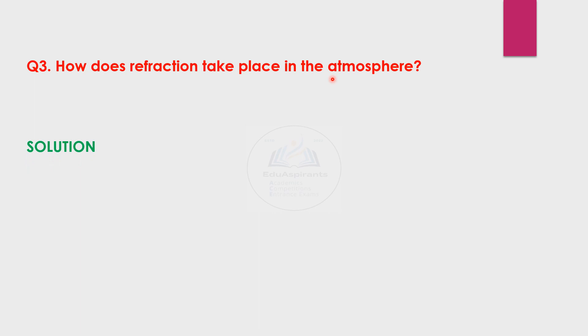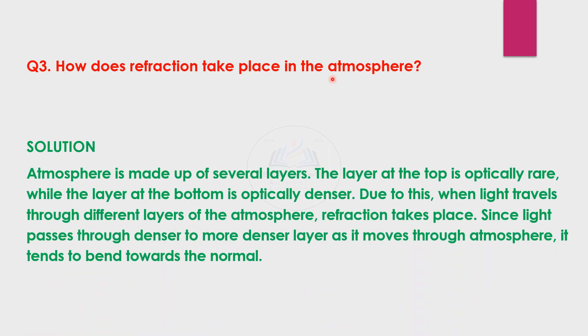Let us see the answer if you have recollected it correct. Atmosphere is made up of several layers. The layer at the top is optically rare while the layer at the bottom is optically dense. Due to this, when light travels through different layers of the atmosphere, refraction takes place.